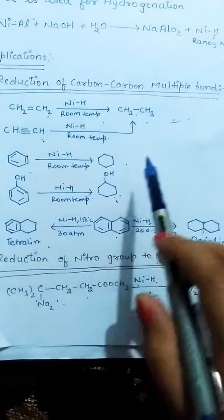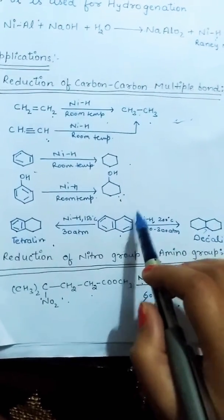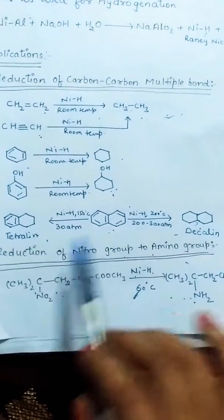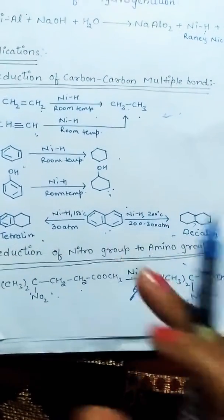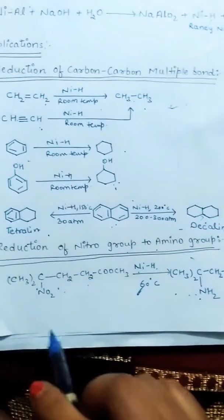Benzene is also changed into cyclohexane. This is also changed into cyclohexanol. These change into decalin and tetralin at different temperatures and pressures in the presence of Raney nickel.